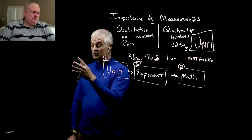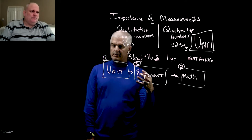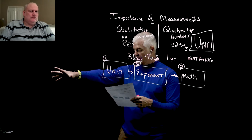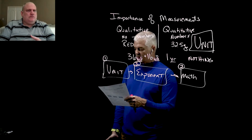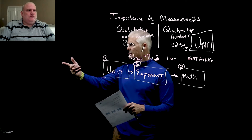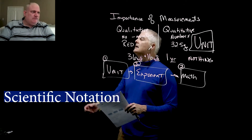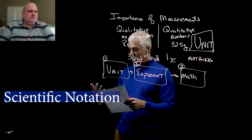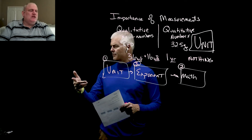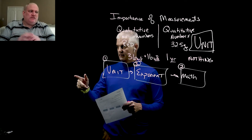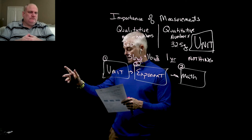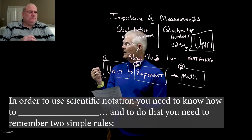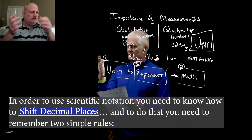Next, we're going to look at exponents and learn how scientists work with them. Scientific notation provides a way for very large and very small numbers to be easily written. We're going to learn about scientific notation, and it also helps us with significant figures, which will be the focus of our next video. In order to use scientific notation, you need to know how to shift decimal places.